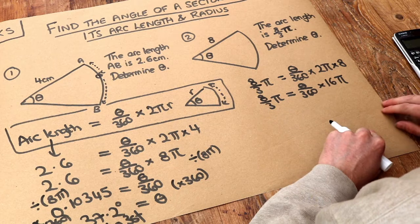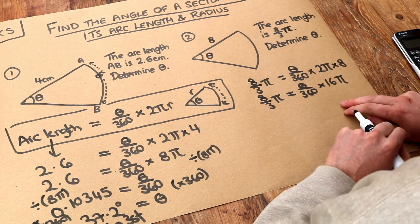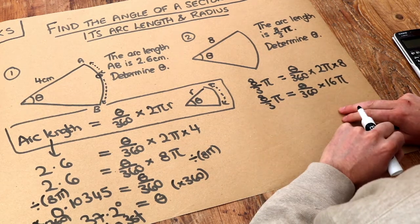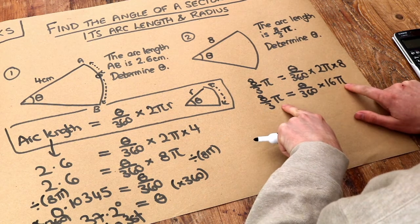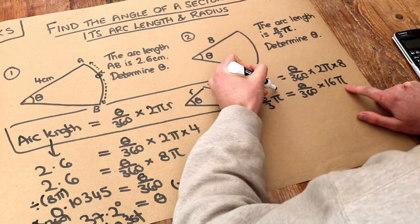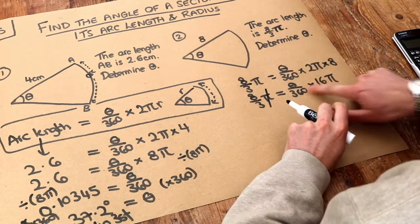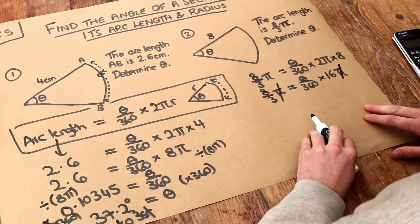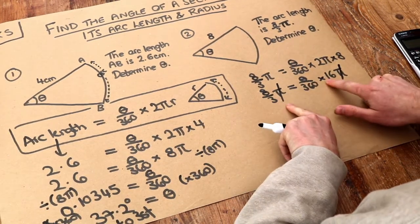So let's just do what we did before. We want to get rid of that times by 16π. So we divide both sides by 16π. In fact, we can just divide both sides by π to start with. Look, if we divide that by π, we get rid of that π. If we divide this by π, we just get rid of that π.